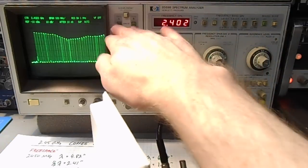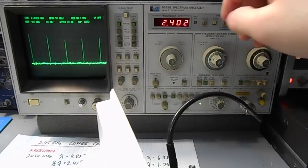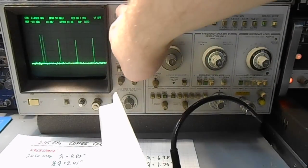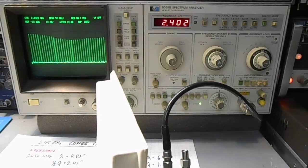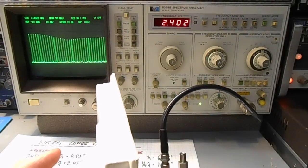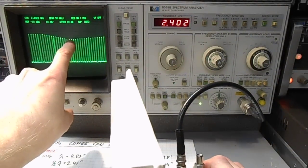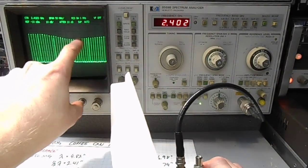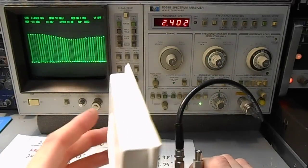It's 50 MHz per division now. It's still centered at 2.4. You can see the nice dip at about 2.45. So this is a commercial antenna designed for the 2.4 GHz band.